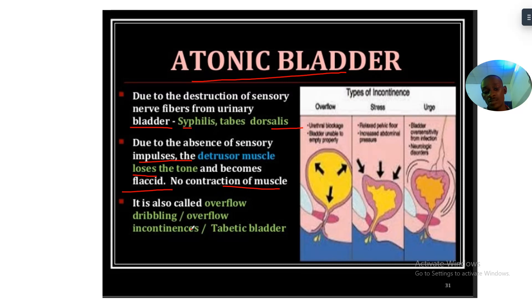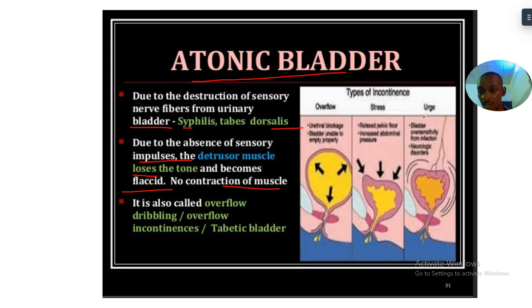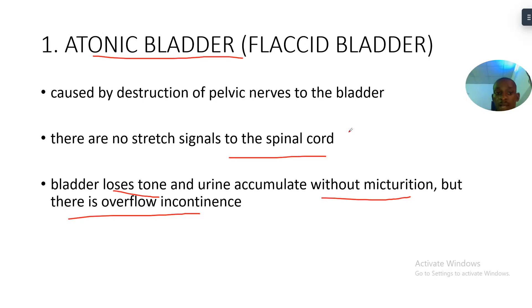The bladder is unable to empty properly. There is a relaxed pelvic floor and increased abdominal pressure. The bladder may show over-sensitivity from infection. Types include overflow stress and urge incontinence. To summarize: atonic bladder results from destruction of pelvic nerves, causing the bladder to lose tone and urine to accumulate without micturition.